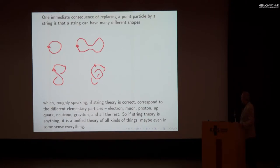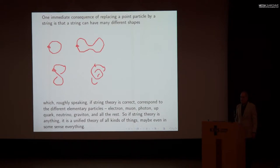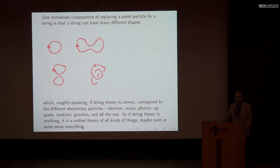If string theory is anything, it's a unified theory of all kinds of things, because the many different possible shapes of the string represent different possible particles. So the string, if it's anything, gives a unified description of many different things — maybe even a unified description of everything.